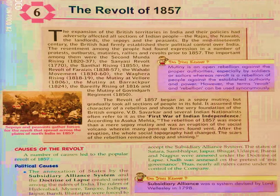The Revolt of 1857 began as a Sepoy mutiny, but gradually it took in all sections of people. As per V.D. Savarkar and several Indian nationalists, the Revolt of 1857 is often referred to as the First War of Indian Independence. As per Ashok Mehta, the rebellion of 1857 was more than a mere sepoy mutiny and was an eruption of the social volcano wherein many pent-up forces found vent. After the eruption, the whole social topography had changed and the scars of the rebellion remained deep.